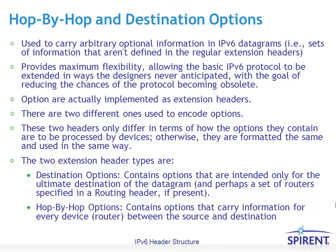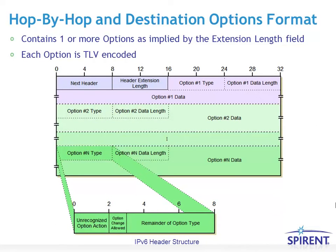Hop-by-hop options are implemented using two extension header types. Destination options are intended only for the destination of the datagram, or perhaps a set of routers in between if specified in the routing header. Hop-by-hop options contain options to carry information for every device — every router — between the source and destination. You can have one or more actual options inside each extension header, encoded as a type, a length, and a value — TLV encoded.